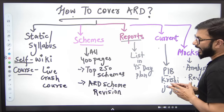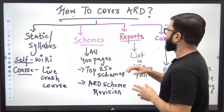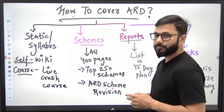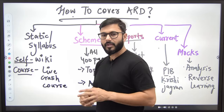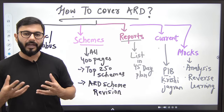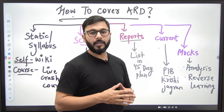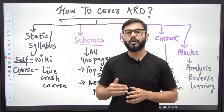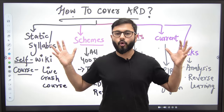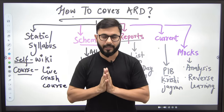Number one is static or syllabus. Number two is schemes. Number three is reports. Number four is current affairs, and number five is mocks. I have divided the entire agriculture and rural development into these major parts and we will try to cover all of them one by one. This creates a holistic picture in your mind as to how to cover ARD.